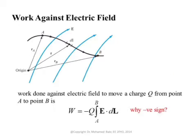We now define the work done against an electric field to move a charge Q from point A to point B. Very similar to the gravity definition, this work equals minus Q times the integral from A to B of E dot dL, where QE is the force. The negative sign indicates we are finding the work done by an external force moving this charge against the electric field.